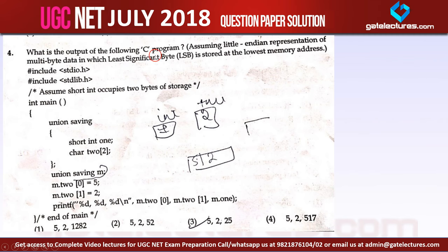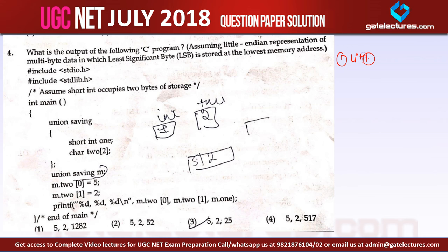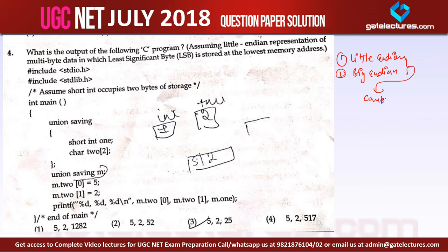What is the output of the C program, assuming Little Endian representation of multi-byte data, in which the least significant byte is stored at the lowest memory address? To solve this question, the first concept you need to know is the difference between the Little Endian Mechanism and the Big Endian Mechanism, which we studied in our Computer Architecture videos.